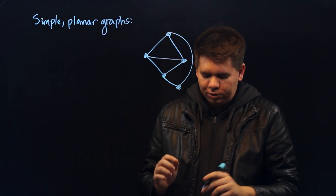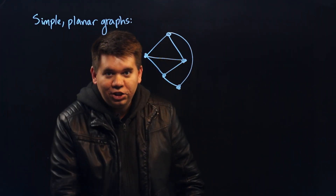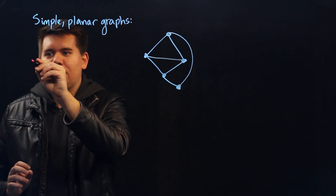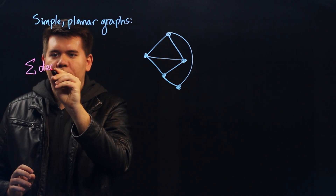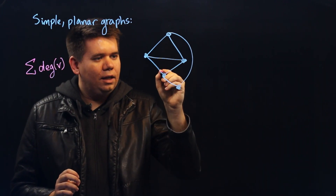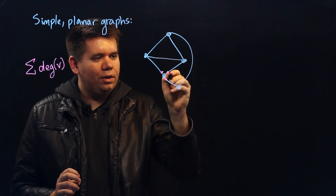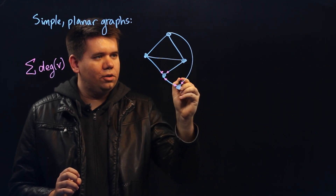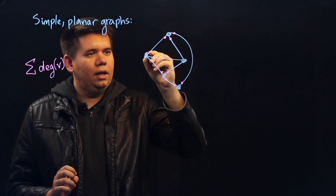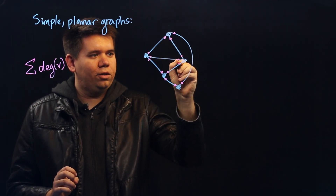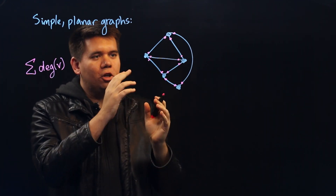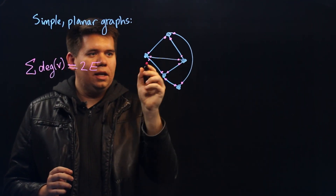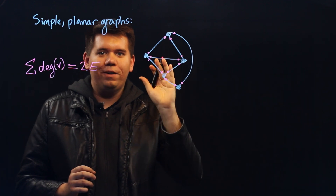One thing we know that's true for simple planar graphs is the handshaking lemma. The handshaking lemma, after all, is true for all graphs. It tells us that the sum of the degree of your vertices — at each vertex, if you put a little dot to count its degree — here this vertex is degree three because there are three edges incident to it. This vertex has degree two, and degree three, and degree three, and degree three. If you add up all those points, it's going to be the same as just calculating two times your number of edges, because there are two points, one on each end of each edge.